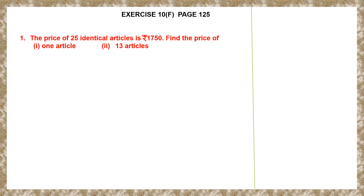Let's read the first question. The price of 25 identical articles is Rs. 1750. We have to first find the price of one article and then find the price of 13 articles. So, the cost of 25 identical articles is given to us as Rs. 1750.